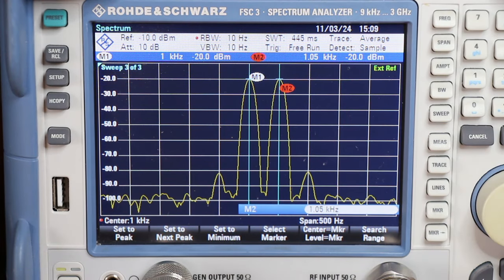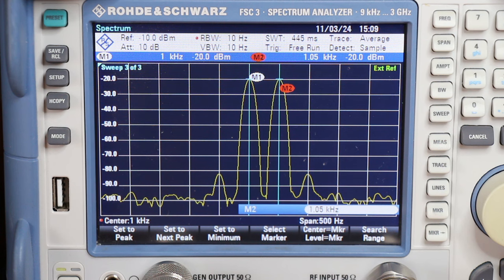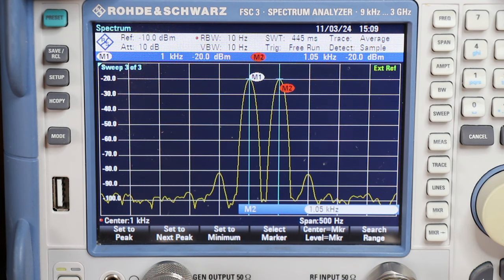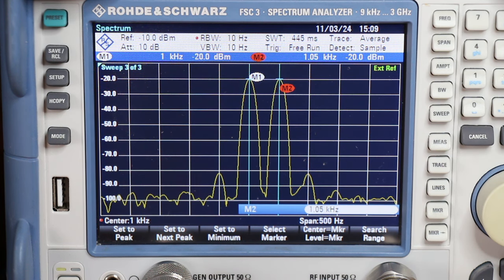Now, if you are lucky to have a spectrum analyzer where you can set RBW of 1 hertz, then you'll be able to see tones 5 hertz apart, or even less, as I'm gonna show right now.